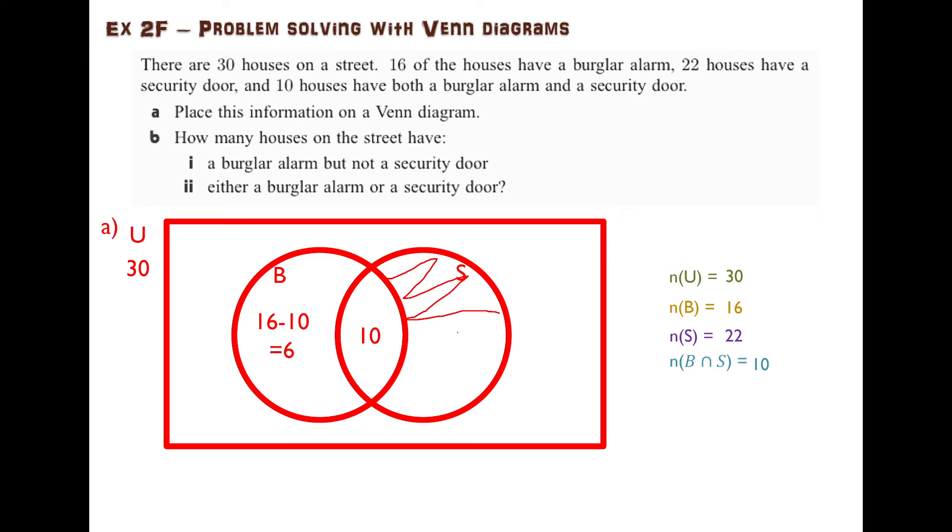We know that there are 22 in the whole S circle. So how many are in this shaded area? 22 take away the 10 in the middle gives 12.